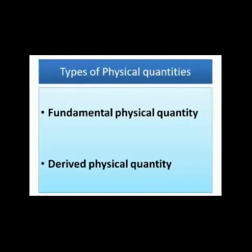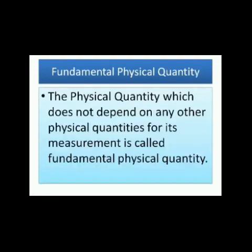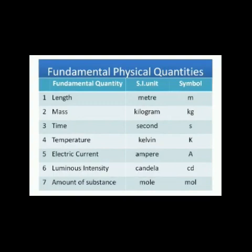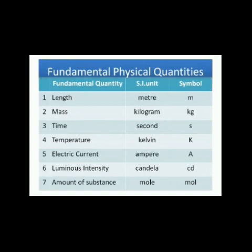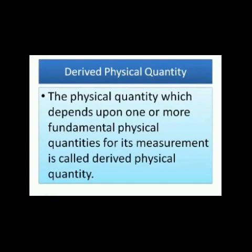There are two types of physical quantities. The first is fundamental physical quantity and the second is derived physical quantity. The physical quantity which does not depend on any other physical quantities for its measurement is called fundamental physical quantity. The units used to measure fundamental quantities are called fundamental units. The seven basic physical quantities — length, mass, time, temperature, electric current, luminous intensity, and amount of substance — are independent of any other quantities and are called fundamental quantities. Physical quantities other than fundamental quantities, which depend on one or more fundamental quantities for their measurements, are called derived quantities.